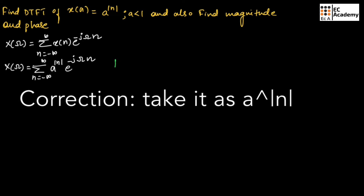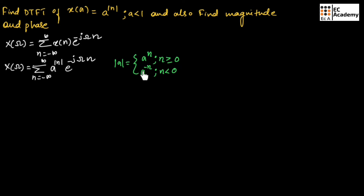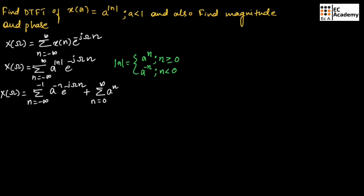Here |n| can be written as a^n for n greater than or equal to 0, and a^(−n) for n less than 0. Therefore, substituting these two values, we can write x(ω) equal to summation from n = minus infinity to minus 1 of a^(−n) · e^(−jωn), plus summation from n = 0 to infinity of a^n · e^(−jωn).